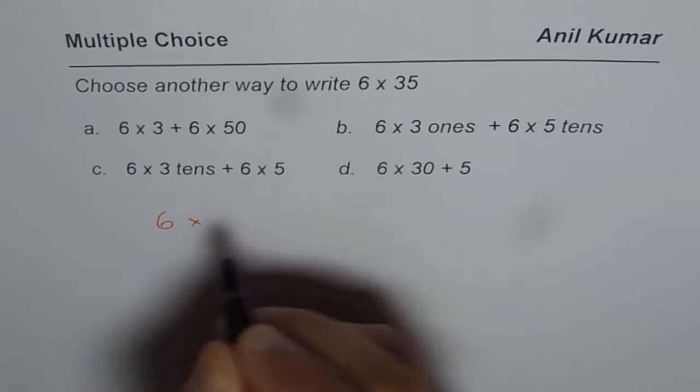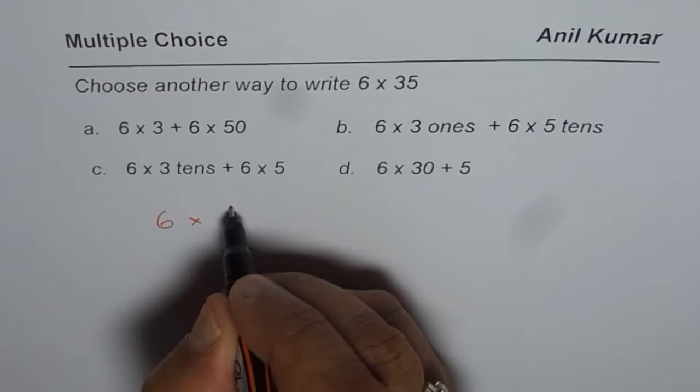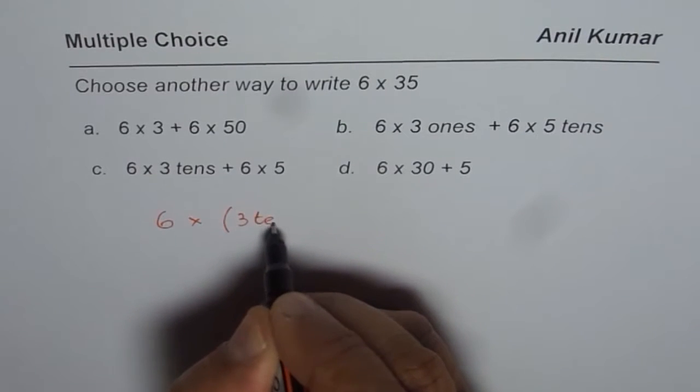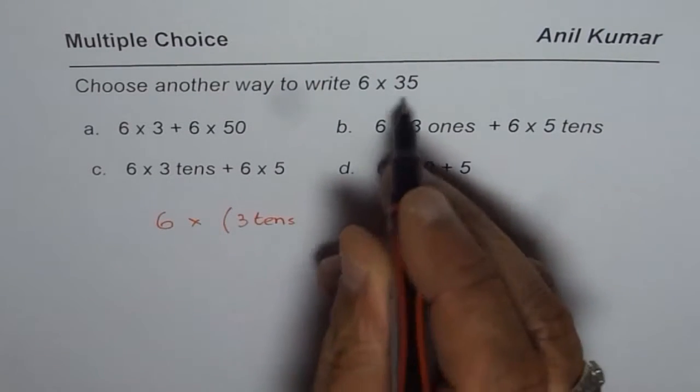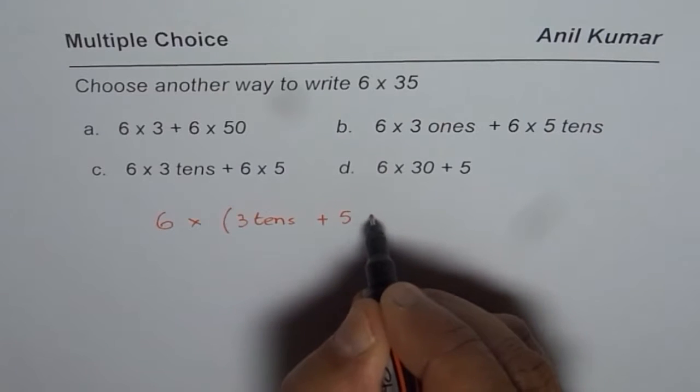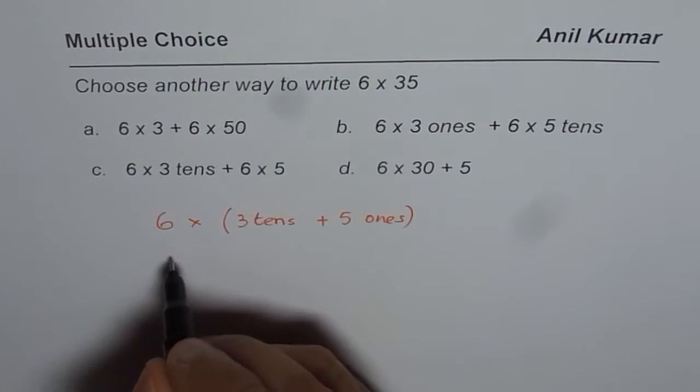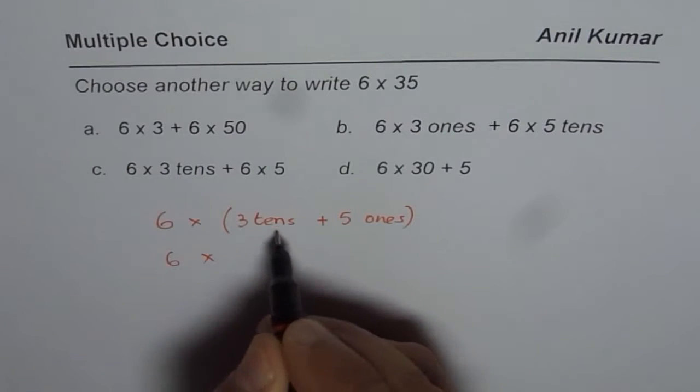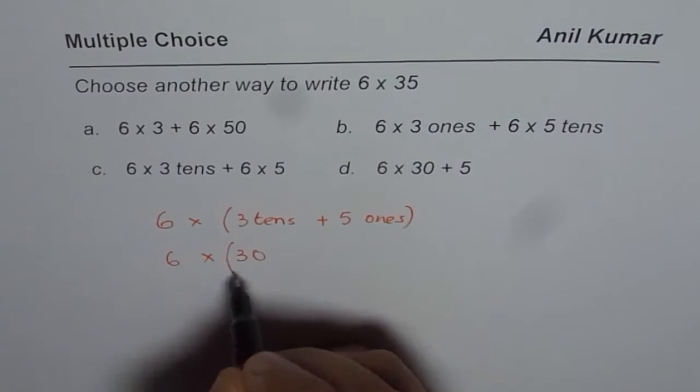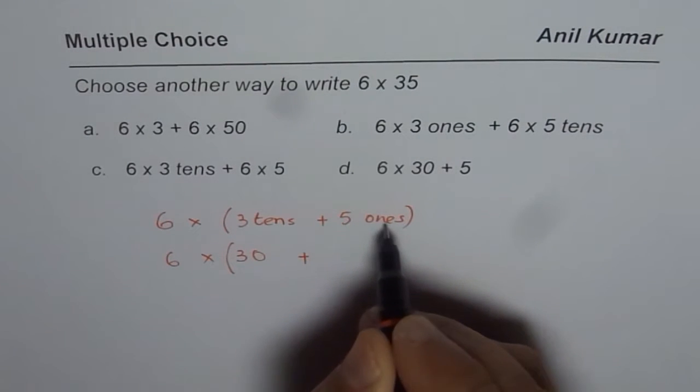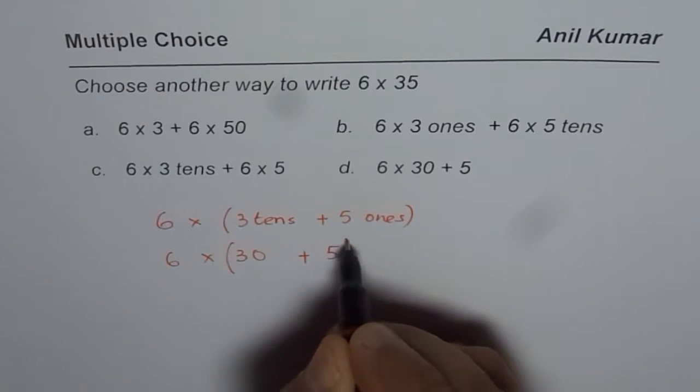6 × 35 means 3 tens (which is 30) plus 5 ones. Do you understand that part? So it's like 6 times 3 tens plus 5 ones, which means 6 × 30 plus 6 × 5. This is 35.